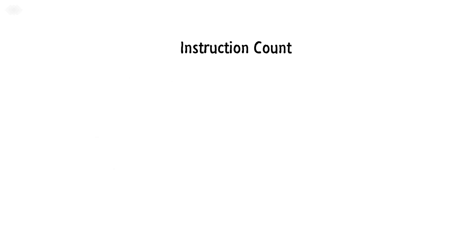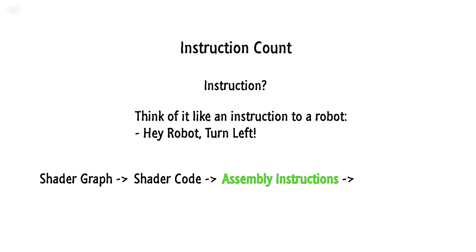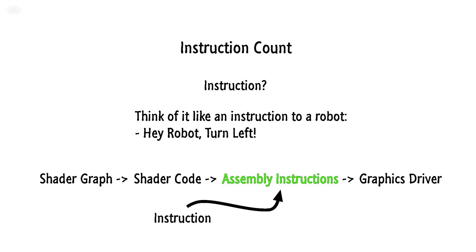Instruction count. The most generic way is to simply count the instructions used in a shader. All code, no matter what language it's written in, must be compiled into instructions for the hardware. Graphic stuff needs to be compiled into something the graphics card can understand. Think of it like instructions to a robot — 'robot turn left' would be one instruction. A shader is compiled from a shader graph into shader code, then into assembler instructions, and finally into a graphics driver used by your graphics card. So what an instruction count really is, is the number of assembly instructions needed to make the graphics card perform a specific task.